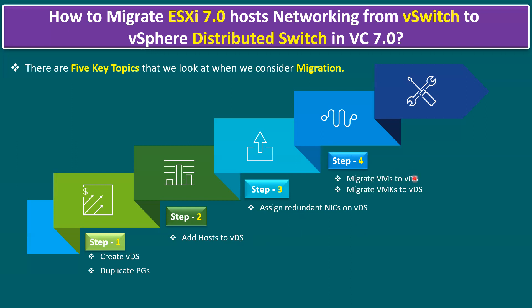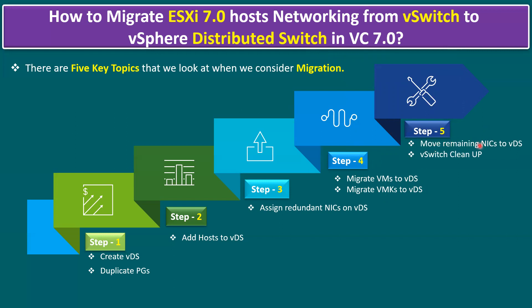In ESXi terminology, NIC cards are also called uplinks — two uplinks for each ESXi host. Step four is to migrate virtual machines to the distributed switch, and also VM kernels. By default, ESXi hosts have VM kernel port groups — one for management network and one for vMotion. Those VM kernel port groups can be migrated directly from virtual switch to distributed switch.